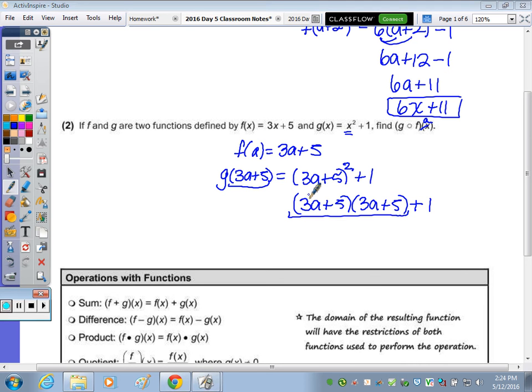So what is the square of 3A plus 5? So the square of 3A plus 5, 3A times 3A is 9A squared. Outside, I'm going to write it as one term. 3A times 5 is 15A. But you should get the same product for the inside. 5 times 3A is also 15A. So 15A and 15A is 30A.